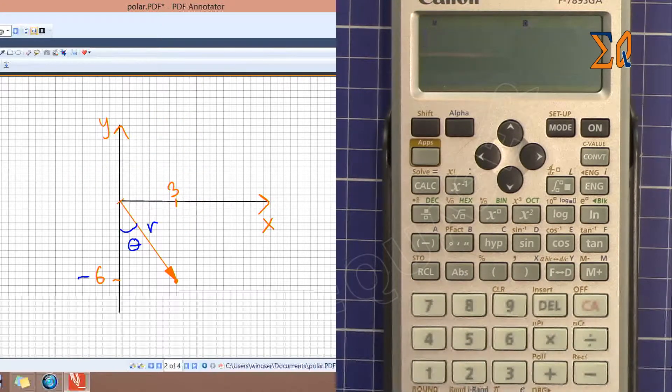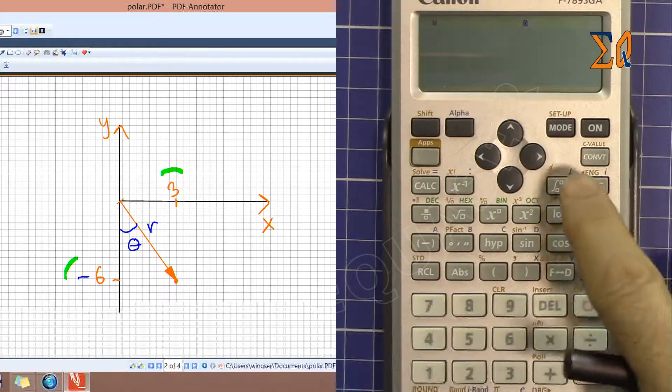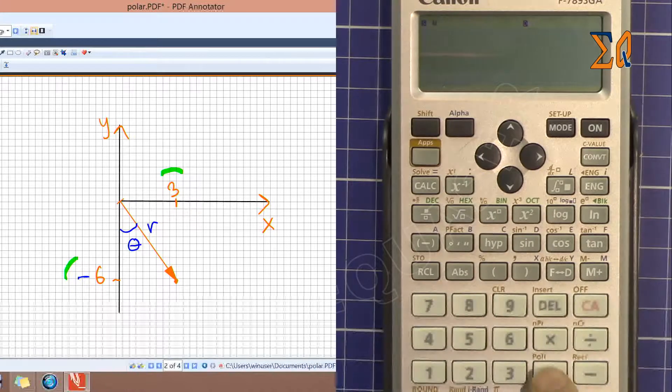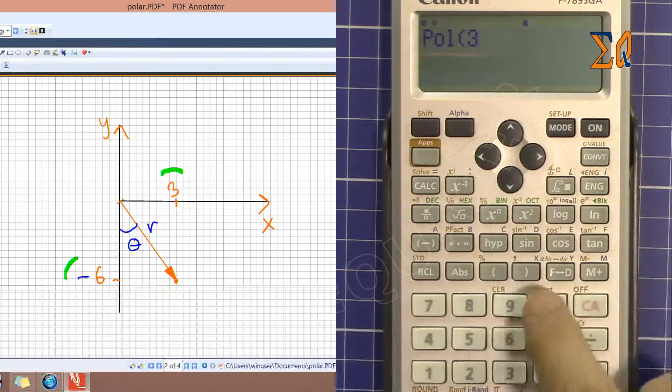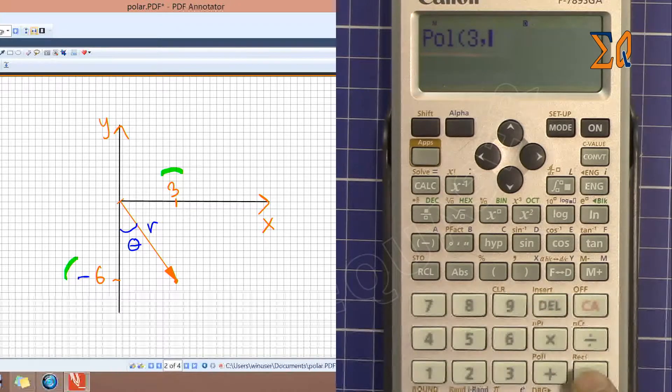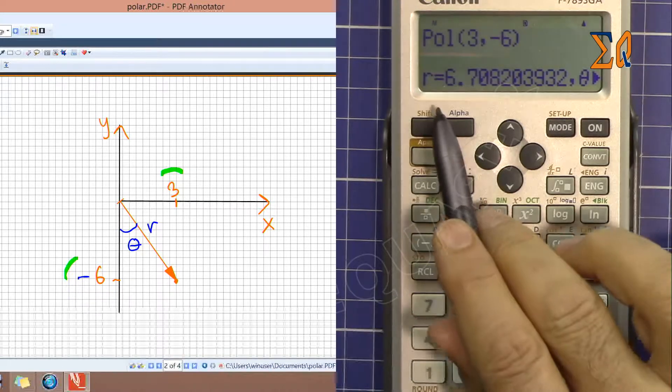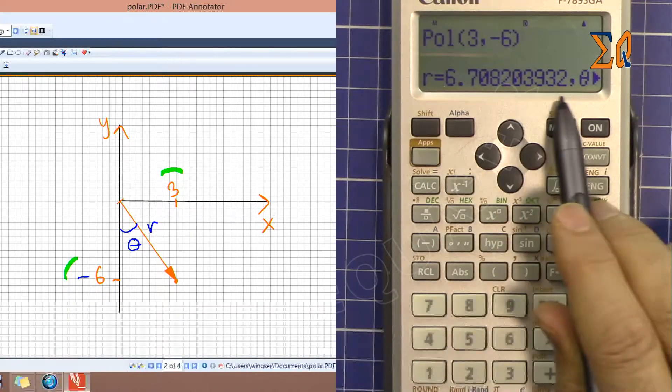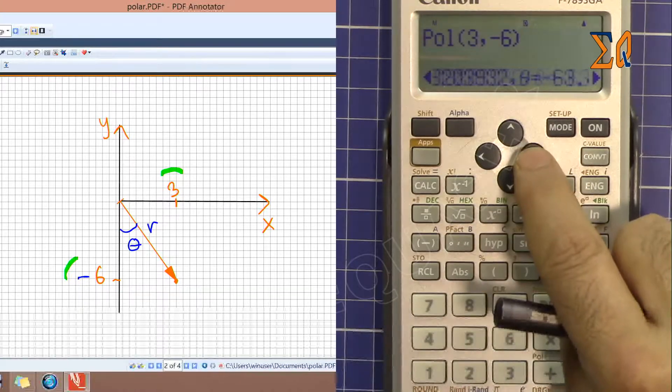Now let's have this example. Now we have X is 3, Y is minus 6. Now let's do it again to polar. Press shift pull 3, shift comma minus 6. For the minus I can use this minus or that minus, minus 6, close, and now we are getting R. This is R and theta.